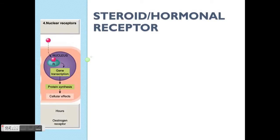Now we'll talk about steroid, also called hormonal receptors. It's the fourth class of receptors based on the original table. The most prominent characteristic of this class is that the receptor is actually located within the cells, so the agonists have to travel through the cell membrane to get into the cells so that they can bind to the receptors.